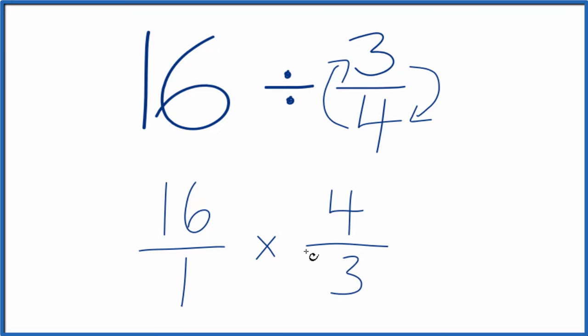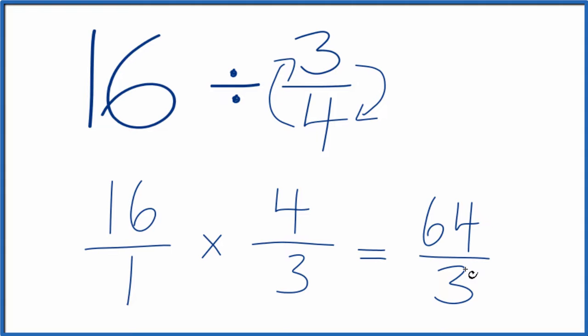Now, when we're multiplying fractions, we multiply the numerators and then the denominators. That gives us our answer. 16 times 4, that's 64. And then 1 times 3, that's just 3. So we have our fraction.